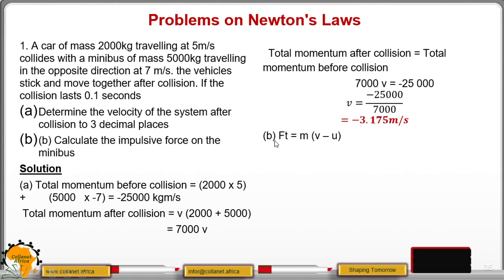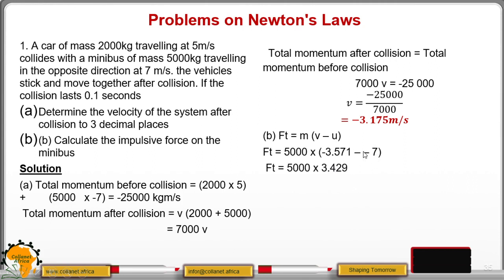That will be the common velocity. Now part b, you are supposed to calculate the impulsive force. First of all, we calculate the impulse. The impulse is given by the change in momentum, and this will be given by 5000 — because we are considering the minibus, we take the mass of the minibus — then the final velocity is negative 3.571, minus the initial velocity of the minibus which is negative 7 meters per second. When you subtract these, it becomes positive: 7 minus 3.571 to get 3.429. When you multiply by the mass, you get that it is 17,145.